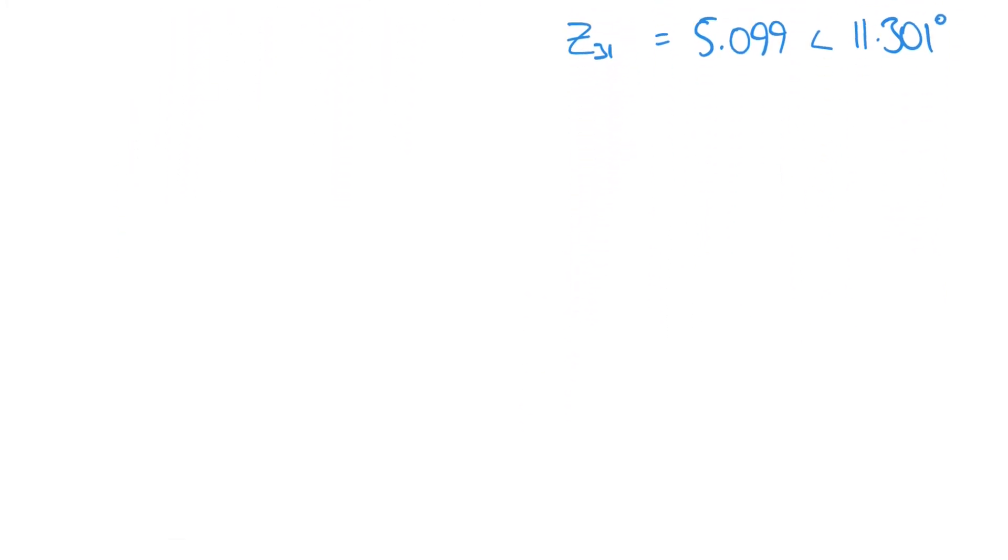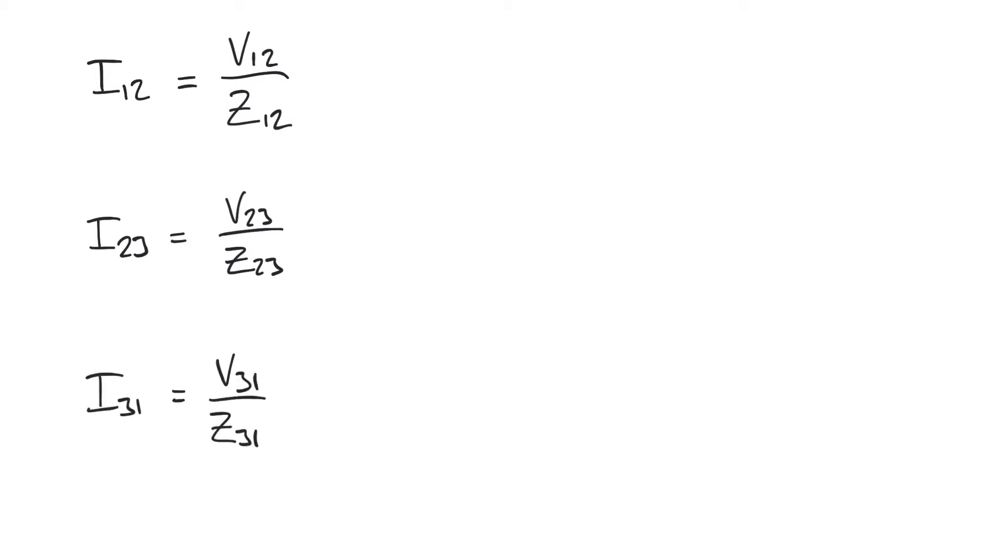What we can then do is calculate the phase currents by dividing the respective voltage by the respective impedance for each phase. So for instance I12 will be equal to V12 divided by Z12, I23 will be equal to V23 divided by Z23, and similarly V31 divided by Z31 to give us I31.